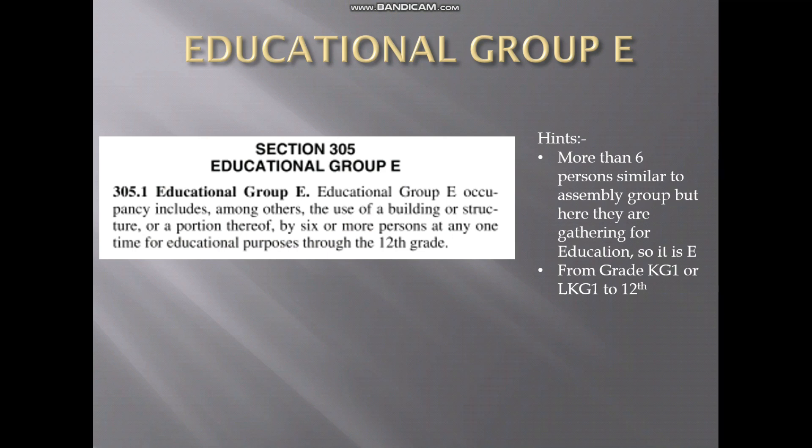The next one is Educational Group E. It doesn't have any subcategory — it's only one. There should be more than six persons gathering for the education purpose. From KG1 or LKG1 to 12th standard comes under Educational Group E. If it is more than 12th standard, as we saw, it comes under Business Group B — like colleges and universities.